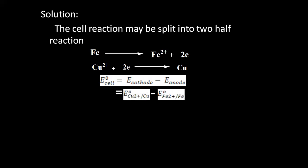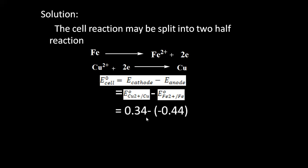Copper is cathode because copper is undergoing reduction, and iron is anode because iron is getting oxidized. Cathode is the electrode where reduction takes place and anode is where oxidation takes place. Copper is clearly getting reduced, so it is cathode; iron is getting oxidized, so it is anode. Once we identify that, we simply put the values: 0.34 − (−0.44), giving us 0.78 V. That is the EMF of the cell.